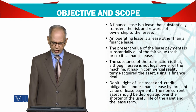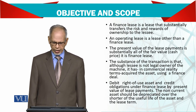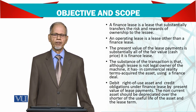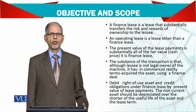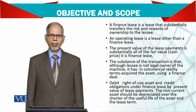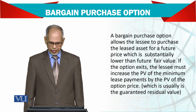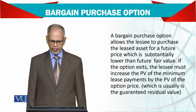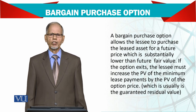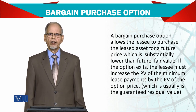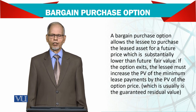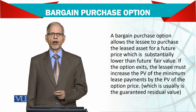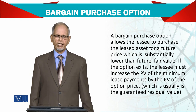The non-current asset should be depreciated over the shorter of the useful life of the asset and the lease term. So if an asset has a 10-year life but you are taking it on a 5-year lease, you depreciate it over 5 years. There is also a bargain purchase option that allows the lessee to purchase the leased asset at a future price which is substantially lower than the future fair value. Normally, the lessee just pays a small amount and the asset is legally transferred to their name.